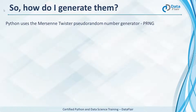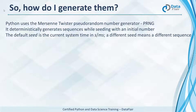The Mersenne Twister is the most common random number generator in Python. It is a PRNG — a pseudo-random number generator. It is called so because its period length is a Mersenne prime, a prime number that is also 1 less than a power of 2, that is 2 to the power n minus 1. It uses a number to seed the algorithm and deterministically generate sequences. This seed is the current system time in seconds or milliseconds.